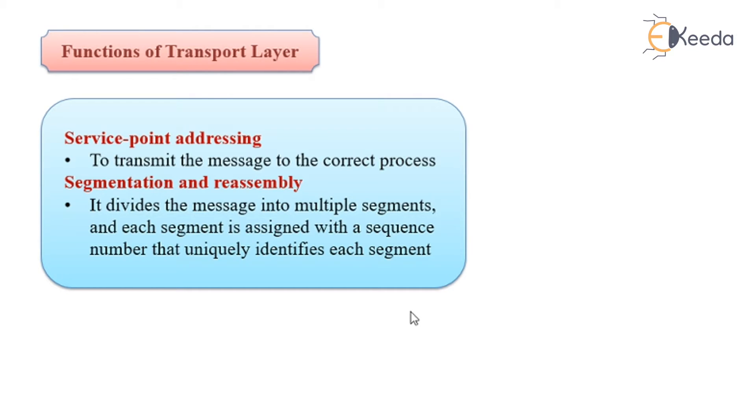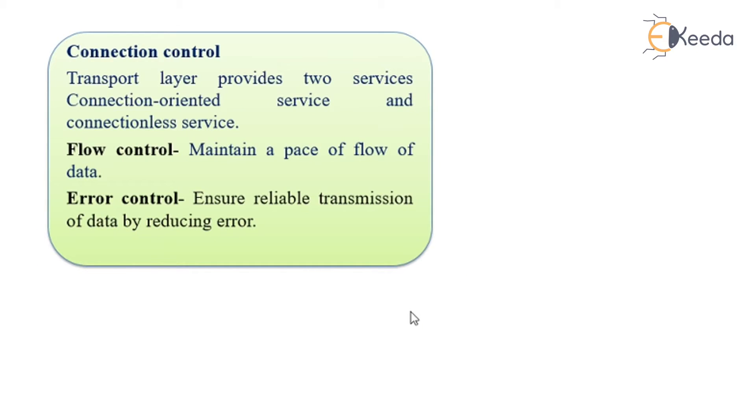Functions of transport layer include service point addressing, which means to transmit the message to the correct process. Second function includes segmentation and reassembly. It divides the message into multiple segments and each segment is assigned with a sequence number that uniquely identifies the segment. Connection control. Transport layer provides two services: one is connection-oriented and another one is connectionless. It also maintains flow. Maintaining the pace of flow of data is important in order to avoid the loss of data. Error control ensures reliable transmission of data by reducing the error.